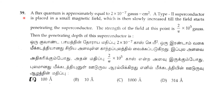Next, question 39: A flux quantum is approximately equal to 2 × 10⁻⁷ Gauss centimeter squared. A type 2 superconductor is placed in a small magnetic field which is then slowly increased until the field starts penetrating the superconductor. The strength of the field at this point is (2/π) × 10⁵ Gauss. Find the penetration depth of the superconductor.